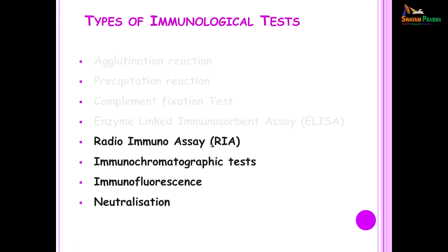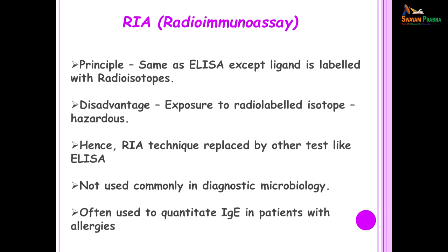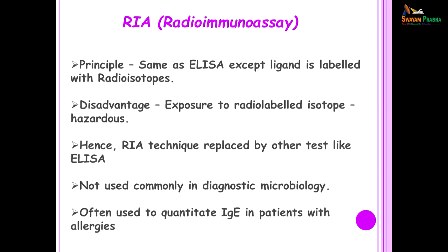Another type of test is the radioimmunoassay. This is just like the ELISA except that the ligand is labeled with radioisotopes and you need a Geiger counter to count the number of radioisotopes present in the sample. This is a hazardous test, replaced by tests like ELISA where you do not need complicated equipment and do not have problems disposing of used chemicals. It is not commonly used in the diagnostic microbiology lab, but is often used for quantitation of IgE in patients who suffer from allergies, since IgE cannot be quantitated by a test like radial immunodiffusion.